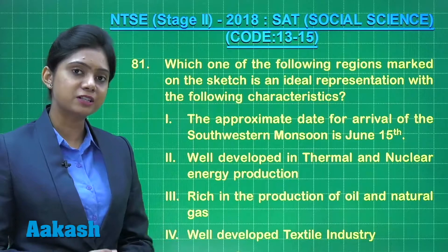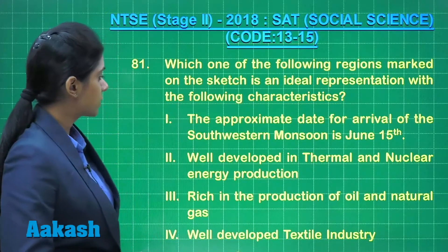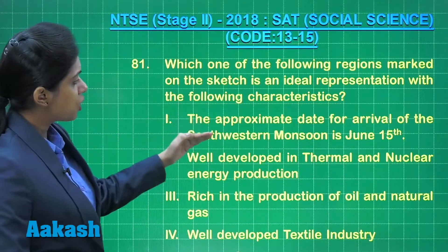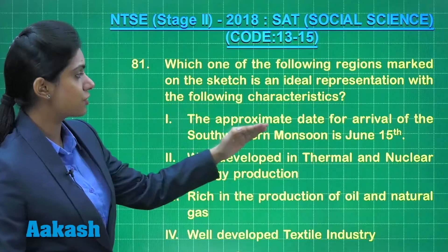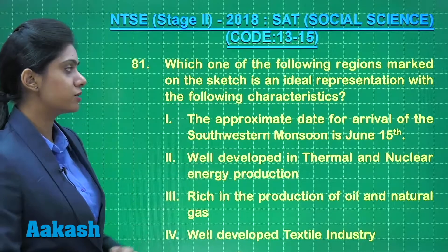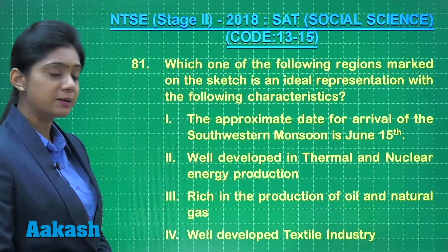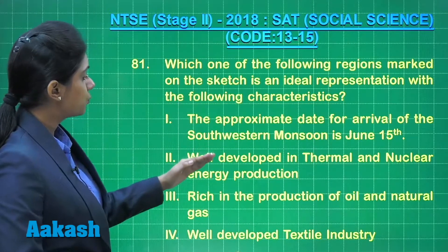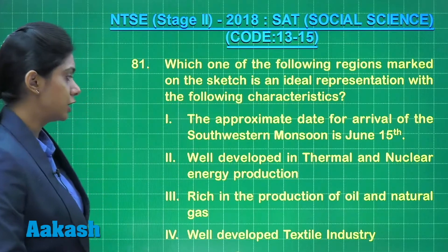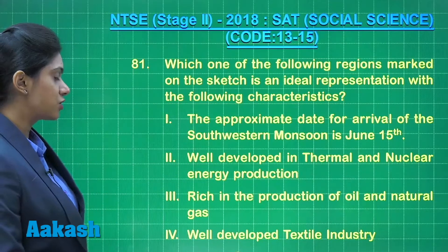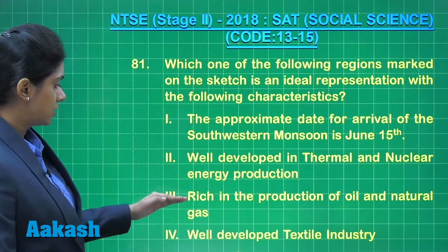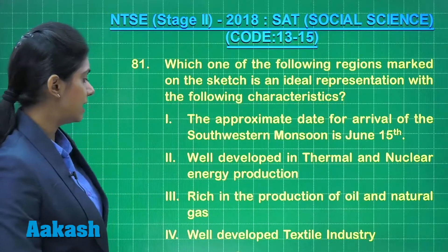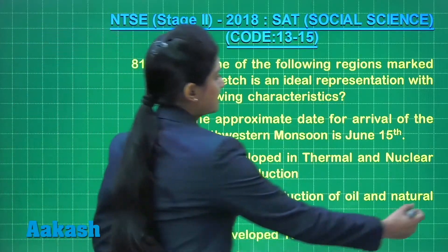Let's first read the characteristics given to us. The first one says the approximate date for arrival of the southwestern monsoon is June 15. Second states: well developed in thermal and nuclear energy production. Third one says: rich in the production of oil and natural gas.